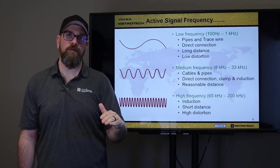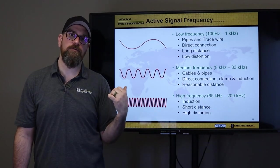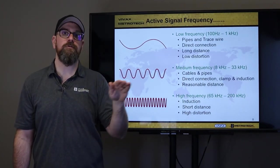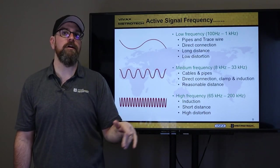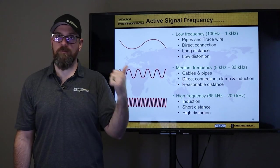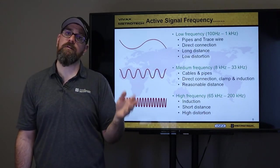So, in this slide, we've got our frequencies. As you can see, we have different sine waves here to the frequencies. So, we've got lower frequencies, which move slowly, need good hard grounds and direct connection. We've got medium frequencies, work with direct connection, induction, and our signal clamp. High frequencies, same thing.